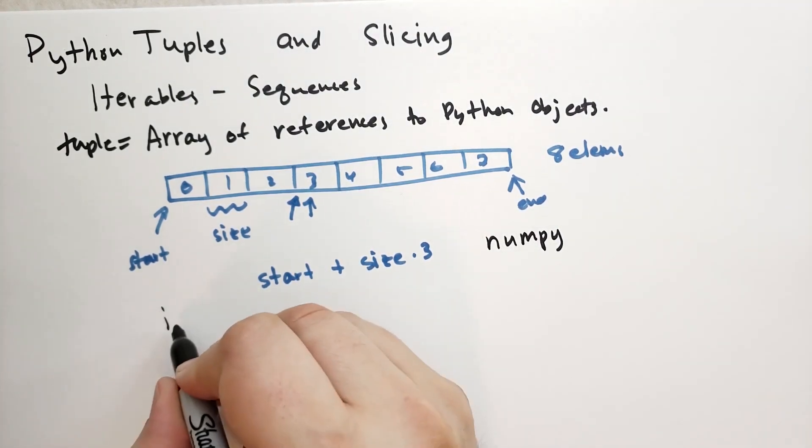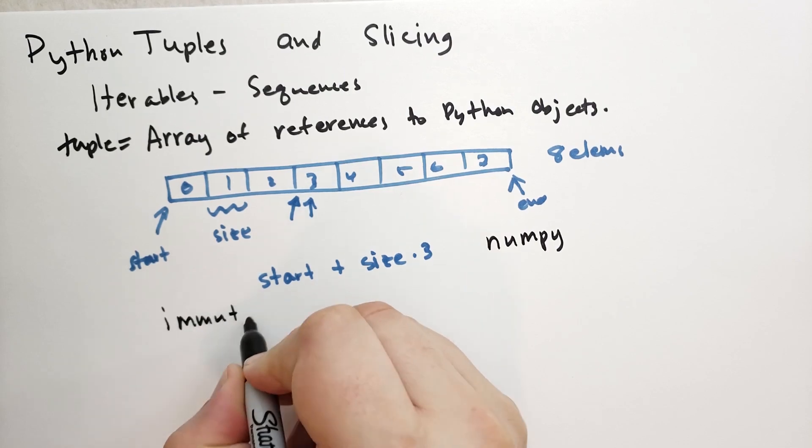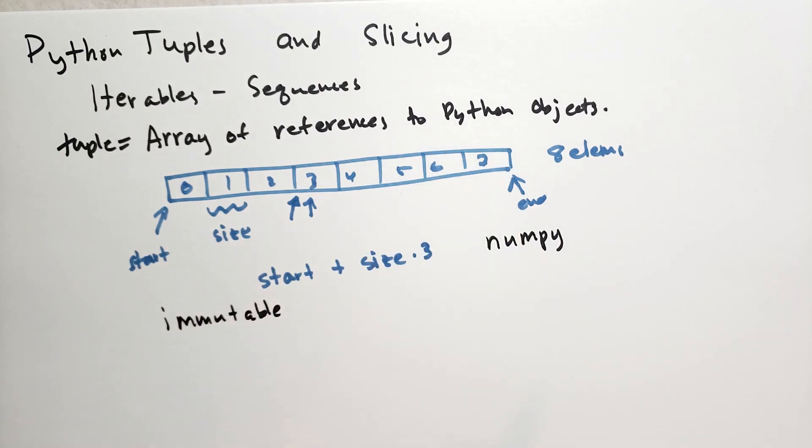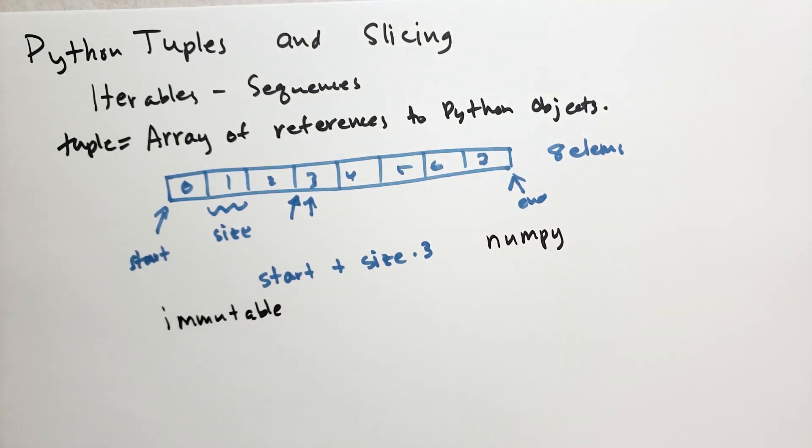Tuples are immutable. That means that once you create a tuple, you cannot change what objects that the tuple refers to. However, the objects themselves may be mutable. So that can be a little bit confusing.